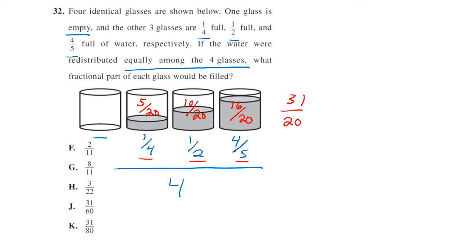We're going to add those together: 5 plus 10 plus 16 is 31/20. So total that's how much we have, 31/20, and we're going to divide that by 4. When we divide it by 4, multiply by 1/4, so this gives us 31/80 is how much each glass will have, or choice K.